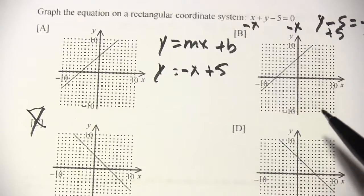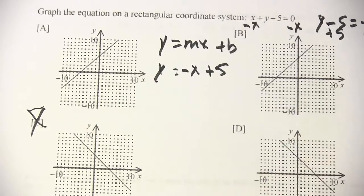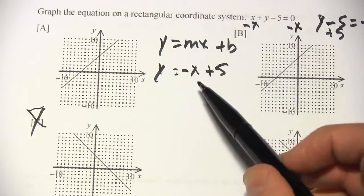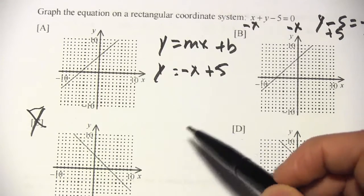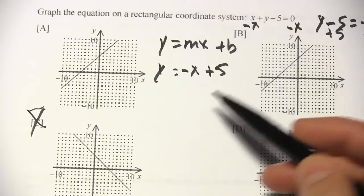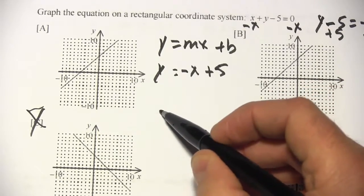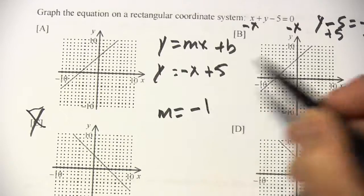But what's the slope? I don't have a number multiplied by x. It just says negative x. Well, when you don't have a number in front of a variable like this, you can think of the coefficient, the number, as just being the number 1. So our slope here is negative 1.